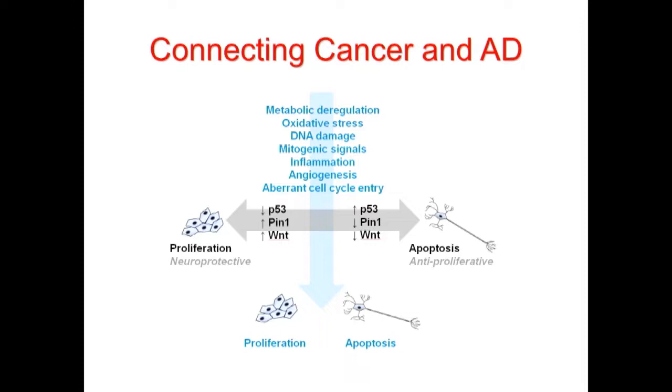I did some epidemiologic studies and showed — and many other people have now confirmed — that there seems to be an inverse comorbidity between cancer and a number of neurological diseases including Parkinson's and Alzheimer's. In geriatrics we're very familiar with comorbidity; chronic diseases tend to travel in packs. But to have an inverse correlation is very unusual. Over the past 10 to 15 years I've been studying these connections and what I've come away with is two axes of interaction.